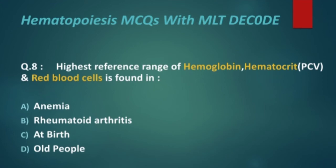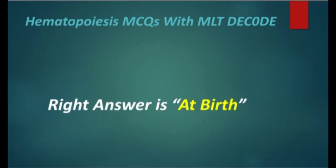Next MCQ: the highest reference range of hemoglobin, hematocrit, and red blood cells is found in — anemia, rheumatoid arthritis, at birth, or old people? The right answer is at birth.